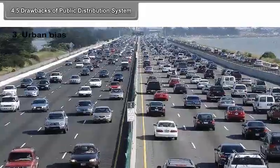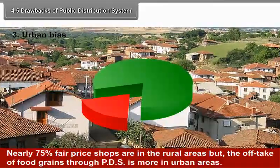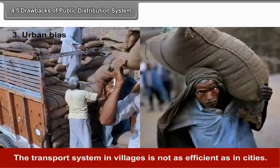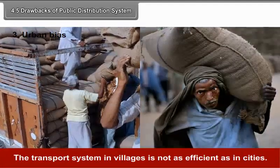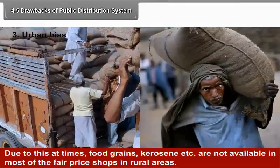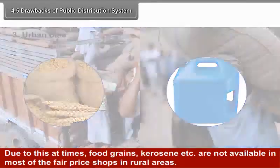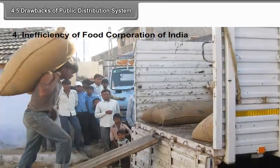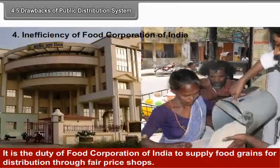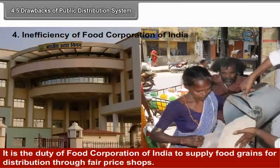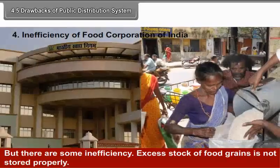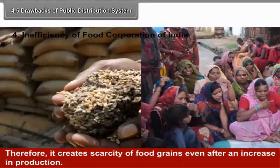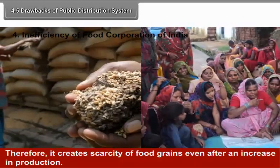3. Urban bias: Nearly 75% of fair price shops are in the rural areas, but the offtake of food grains through PDS is more in urban areas. The transport system in villages is not as efficient as in cities. Due to this, at times food grains, kerosene, etc. are not available in most of the fair price shops in rural areas. 4. Inefficiency of Food Corporation of India: It is the duty of Food Corporation of India to supply food grains for distribution through fair price shops, but there are some inefficiencies. Excess stock of food grains is not stored properly. Therefore, it creates scarcity of food grains even after an increase in production.